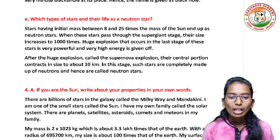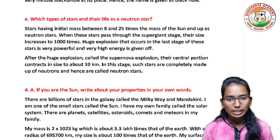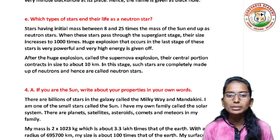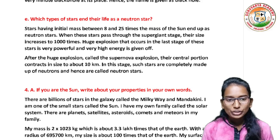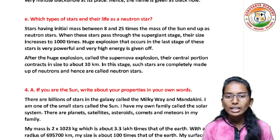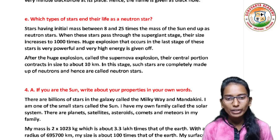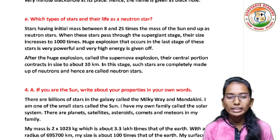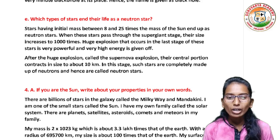Which types of stars end their lives as a neutron star? Answer: stars having initial mass between 8 and 25 times the mass of the sun end up as neutron stars. When these stars pass through the super giant stage, their size increases to 1000 times. The huge explosion that occurs in the last stage of these stars is very powerful and very high energy is given off. After the huge explosion called the supernova explosion, their central portion contracts in size to about 10 km. At this stage, such stars are completely made up of neutrons and hence are called neutron stars.